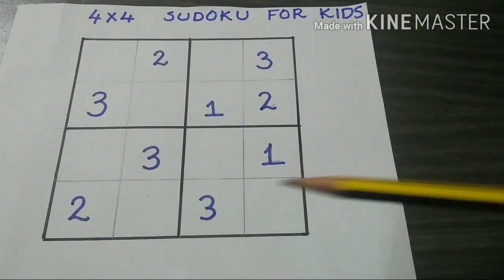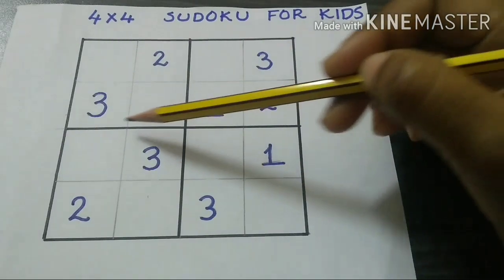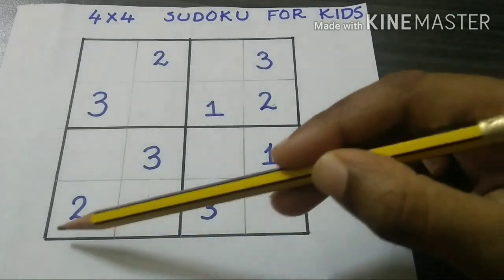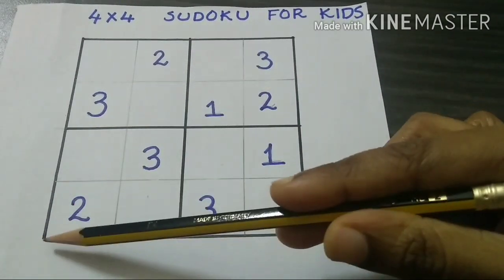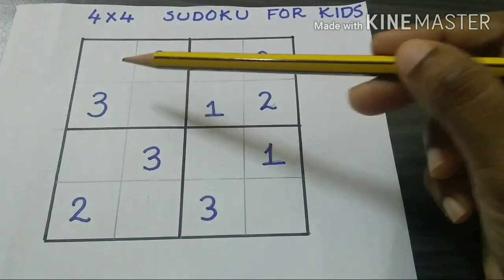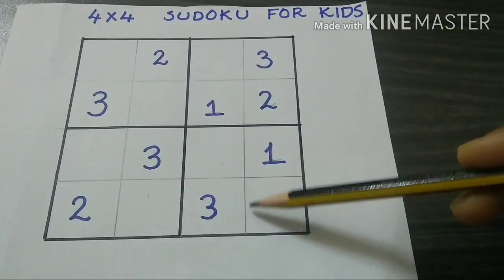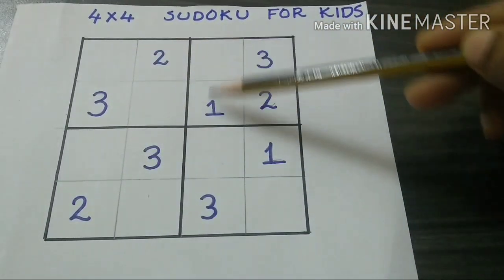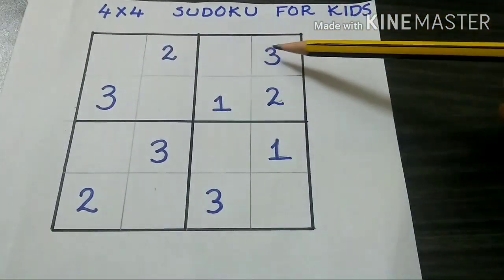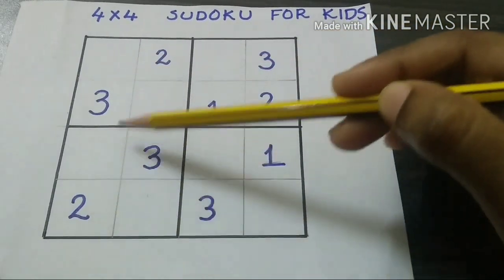This is a 4x4 Sudoku for kids. There are four square boxes shown by dark lines. Each box contains numbers from 1 to 4 without repetition. Each row should contain numbers from 1 to 4 without repetition. Each column should contain numbers from 1 to 4 without repetition.